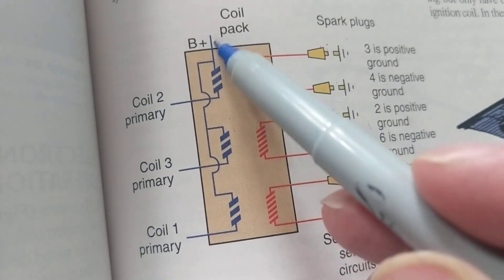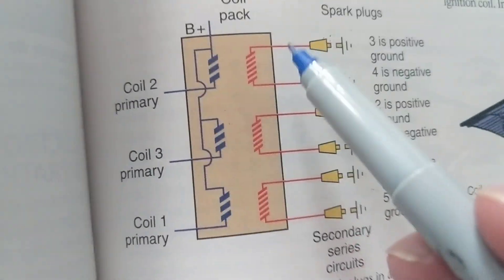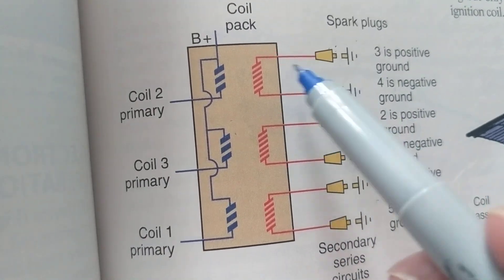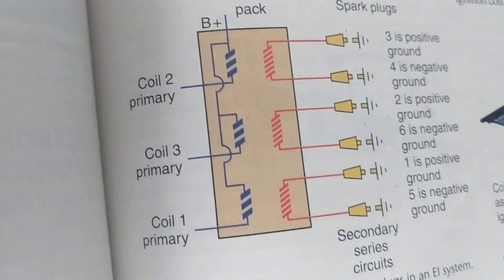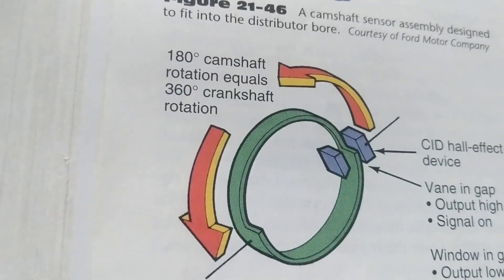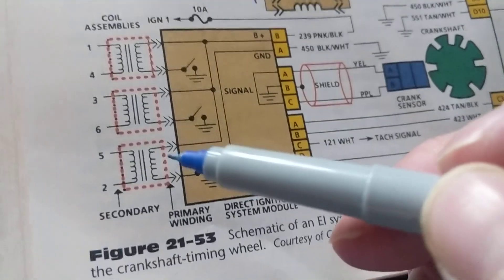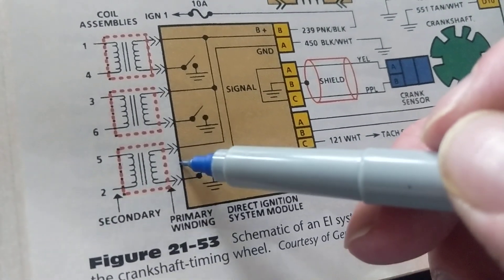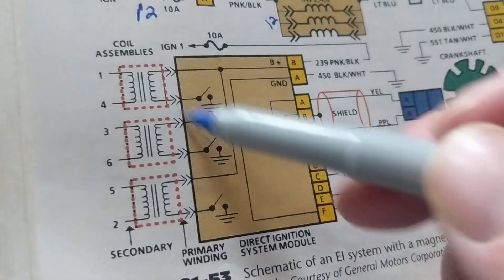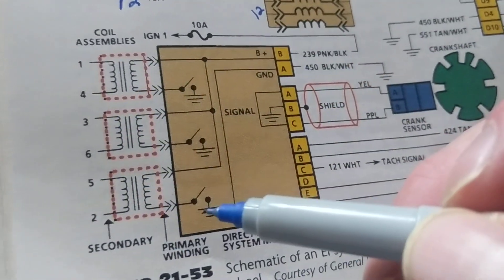In a standard schematic, the primary is always shown on the left side and the spark plugs with high voltage on the right. However, in this particular figure they've flipped it — what you'd expect to be the primary on this side is actually the secondary, and what looks like the secondary is actually the primary. You have to analyze it closely, otherwise you will misdiagnose the schematic.